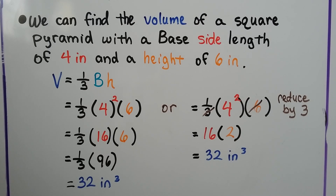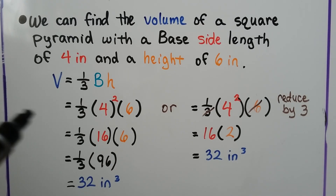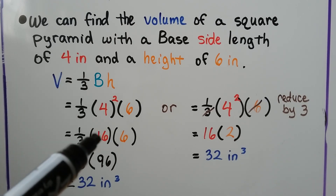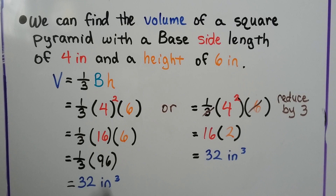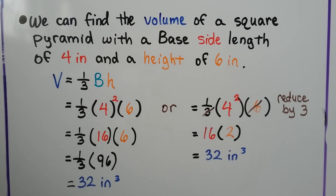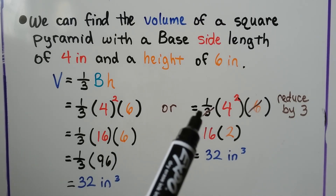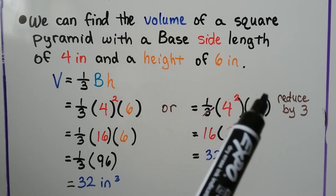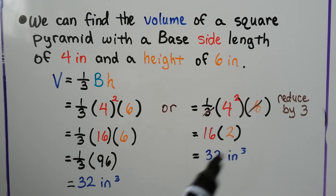We can find the volume of a square pyramid with a base side length of four inches. Since the base is a square, all sides are the same length, and the height is six inches. The base area is four times four, which is 16. We get one-third times 96, or 32 inches cubed. Alternatively, we can cancel the one-third with the six: the six becomes a two, giving us 16 times two, which is also 32 inches cubed.